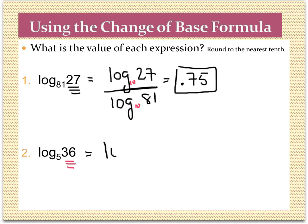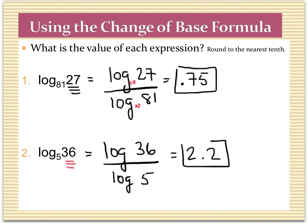This next one is log of 36 over log of 5. Evaluating that in the calculator — log of 36 divided by log of 5 — rounding to the nearest tenth, I get 2.2. The first example came out nice and neat because I could rewrite 81 and 27 with the same bases — that's why 0.75, which is actually 3 fourths, is such a nice number. But this second one had many decimals, so it's a problem I could not have solved using the equation method.